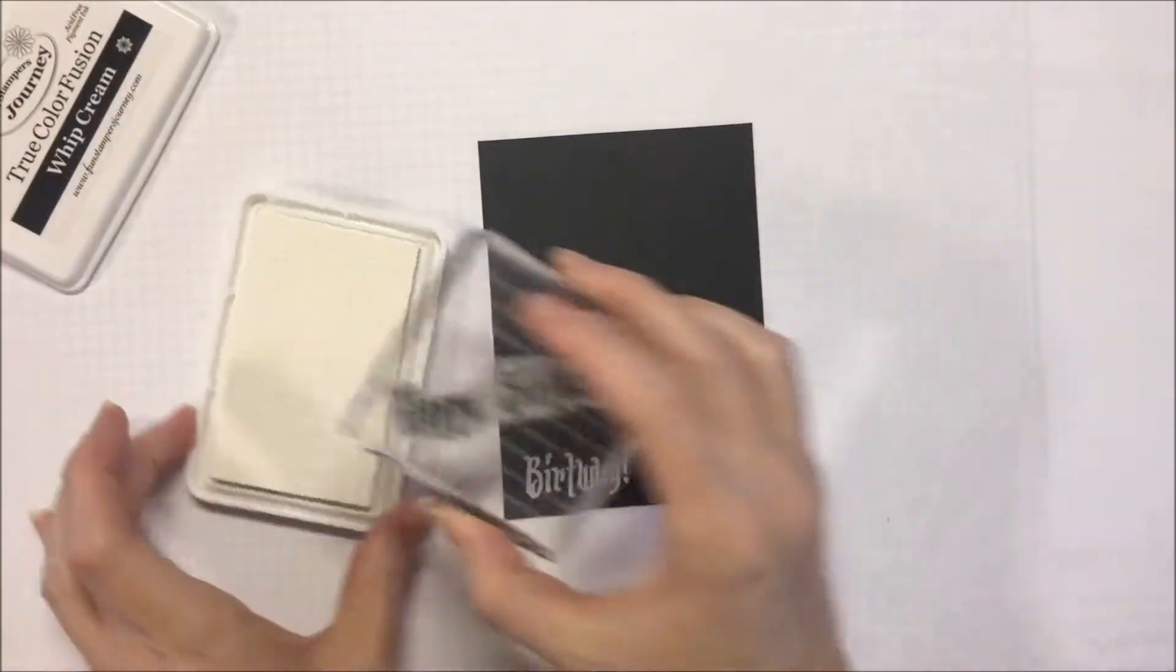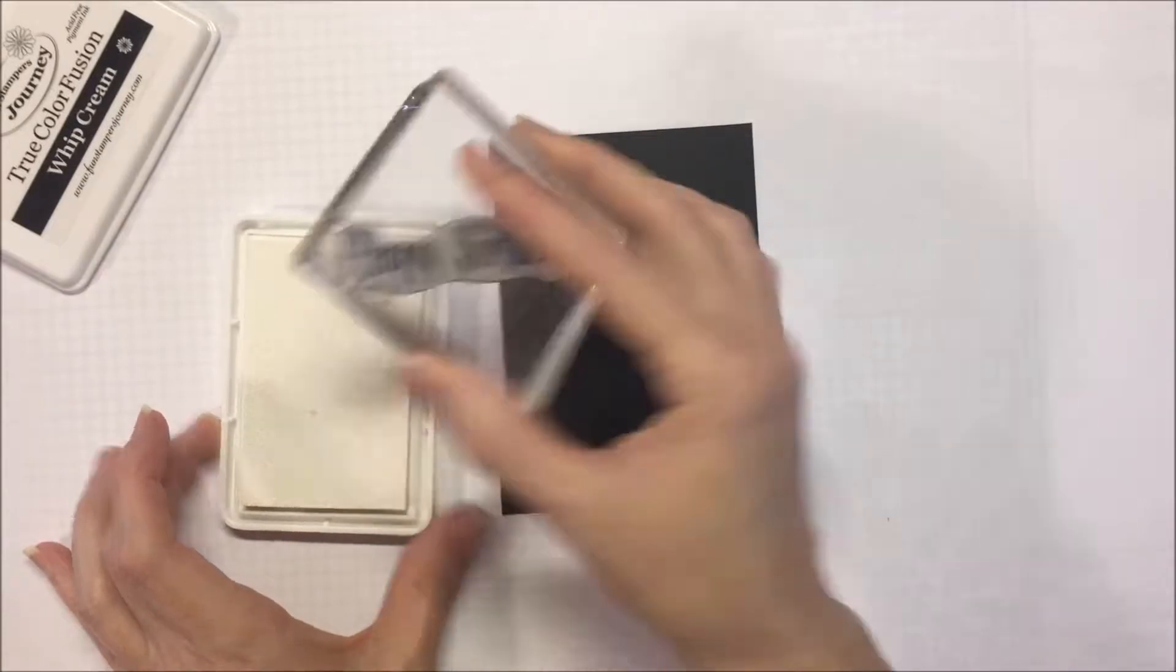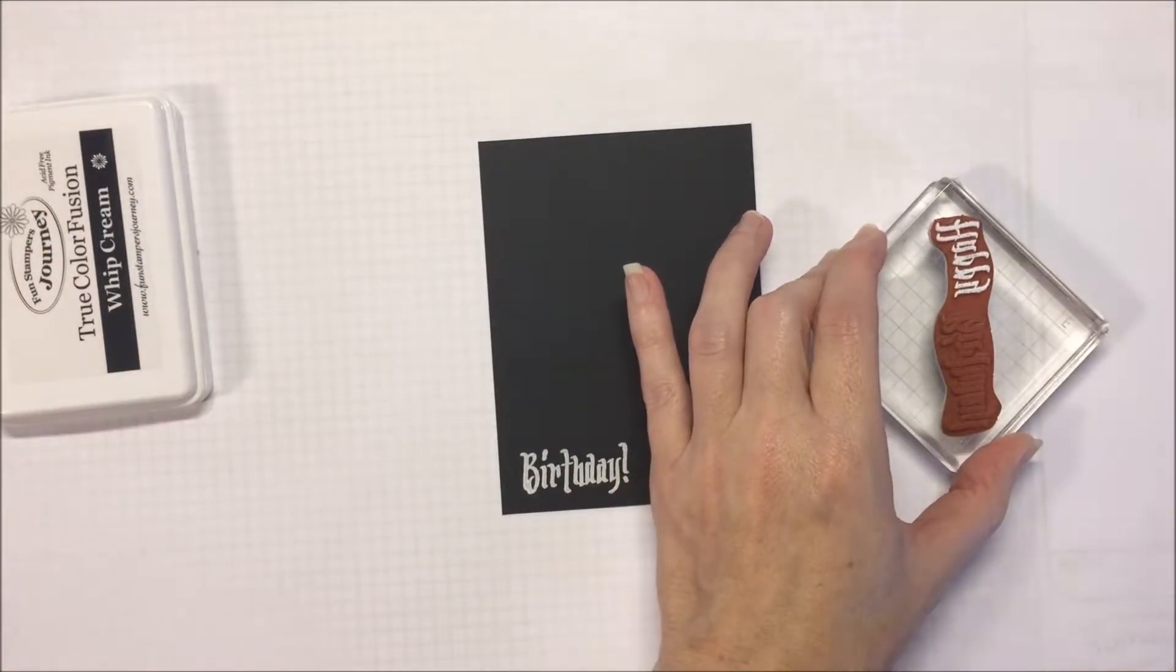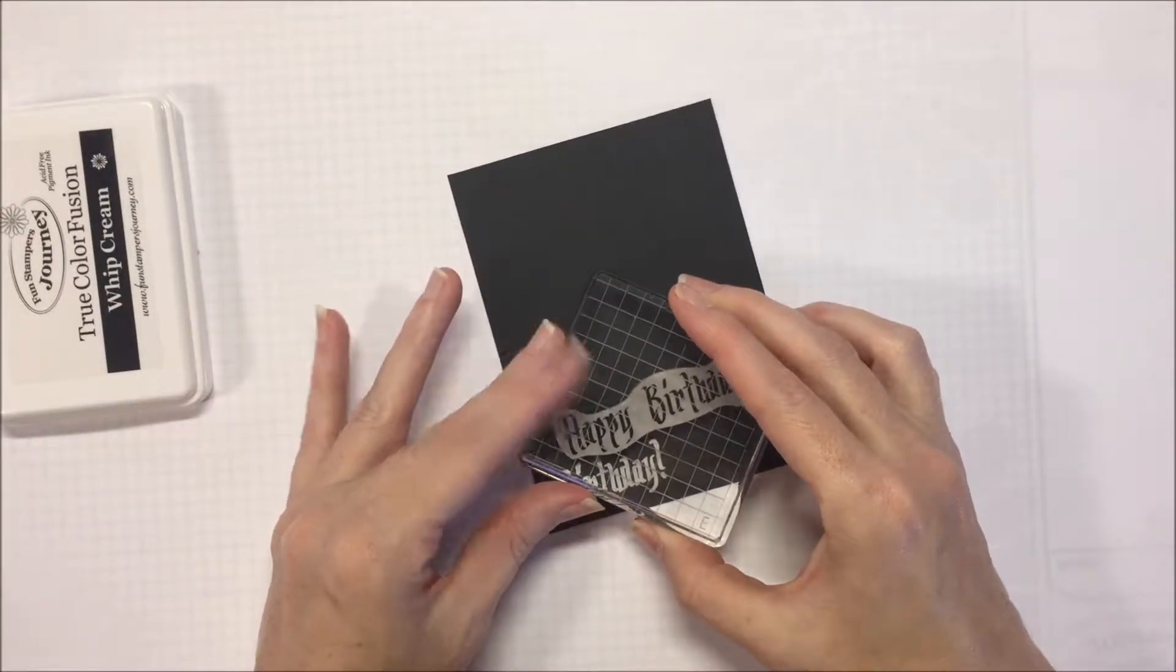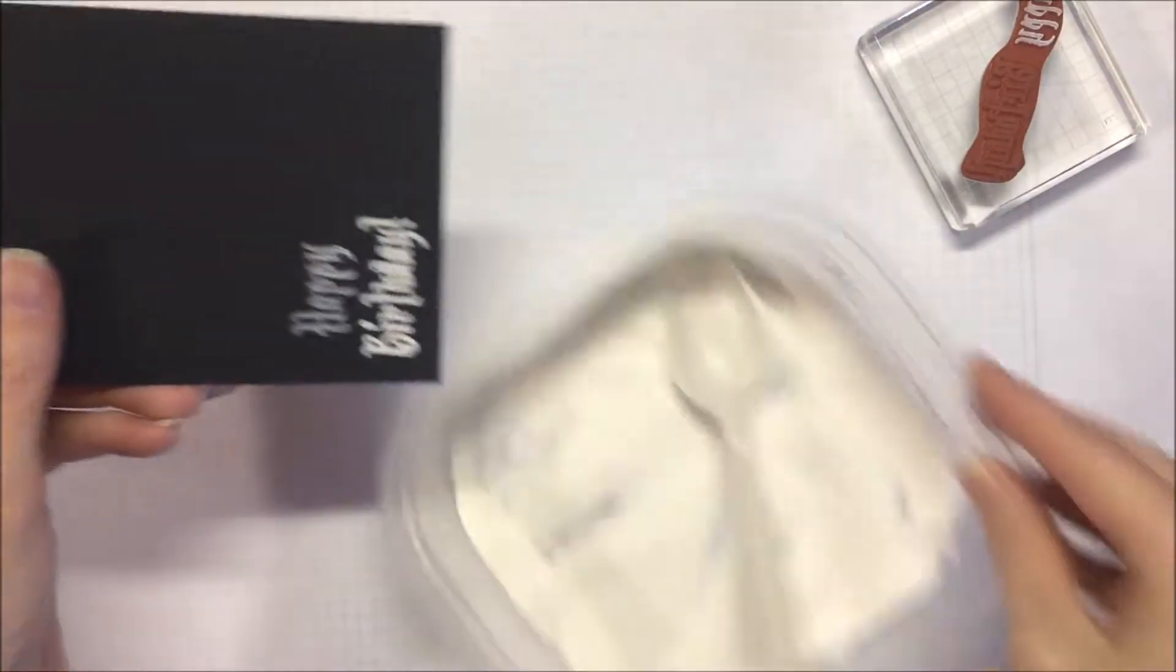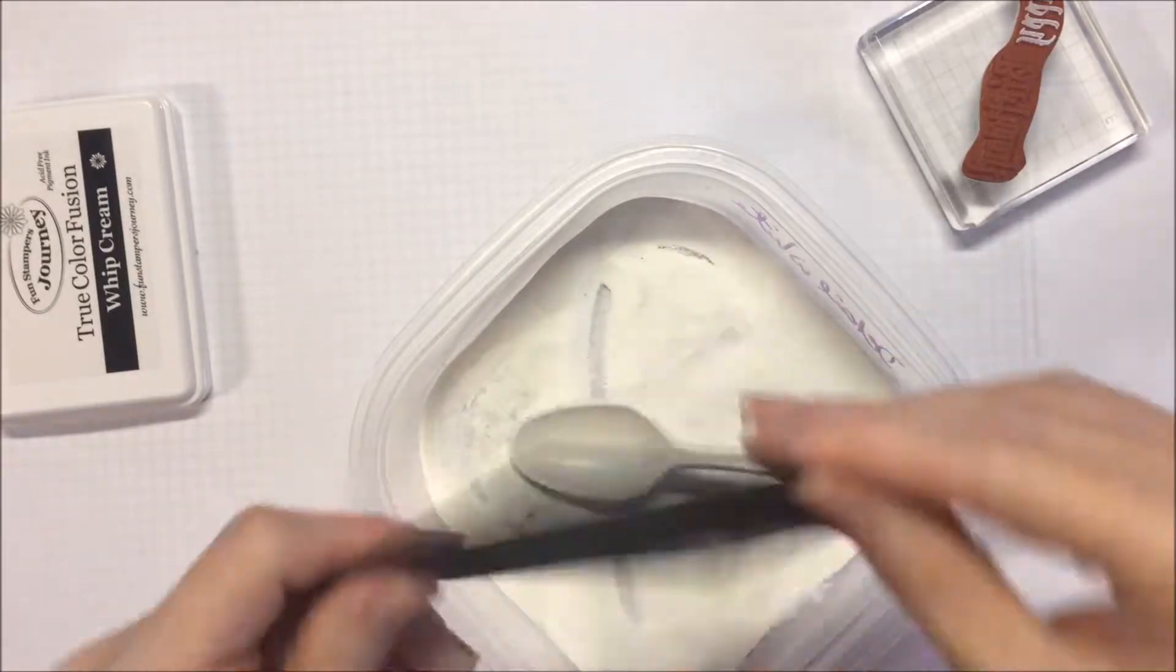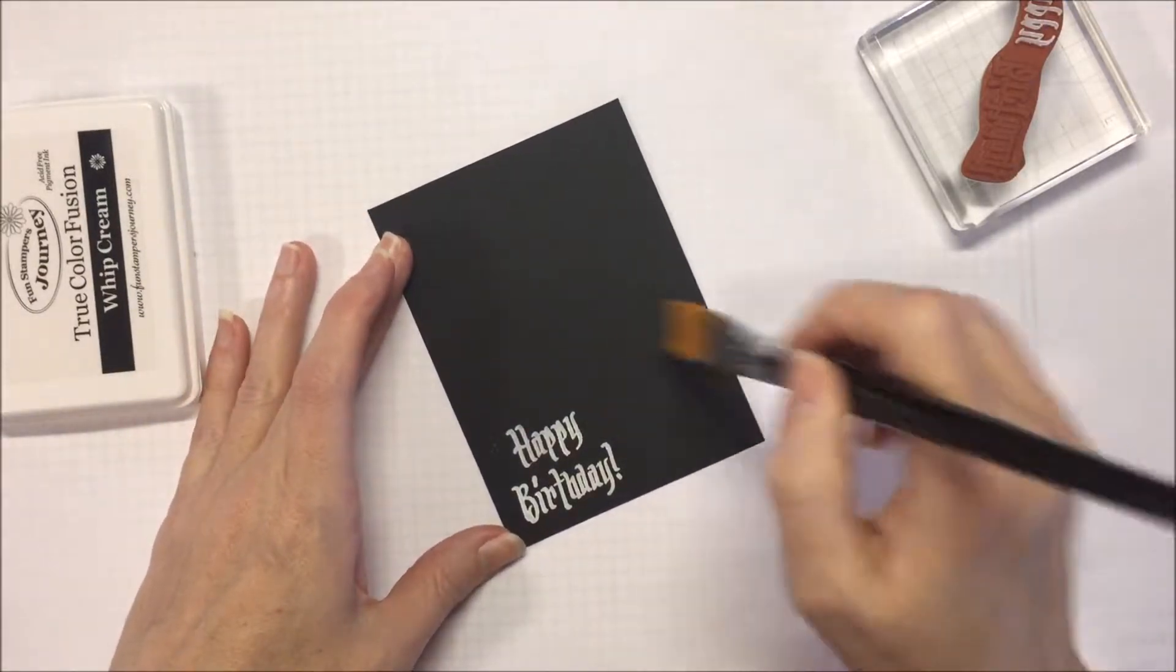And then I'm going to ink up that happy part of the stamp with the whipped cream ink. Got just a little smudge there on my B. Get rid of that. Make sure it's dry. And I'm going to put the happy centered above birthday and put some more white embossing powder on that. If you have some stray powder, you can just use a brush and get rid of that.